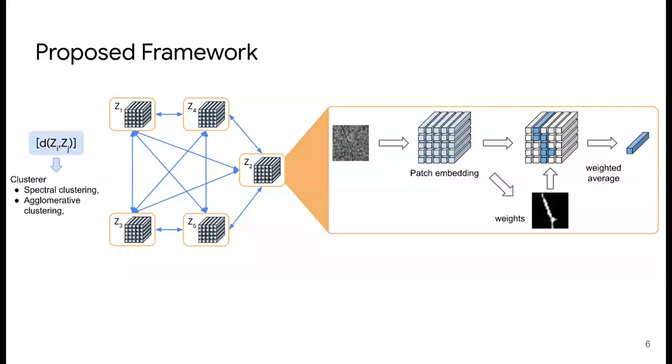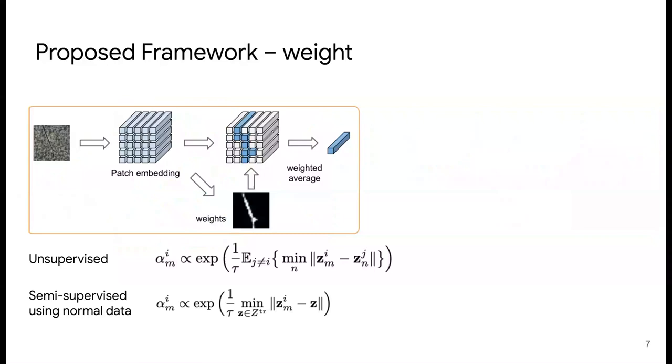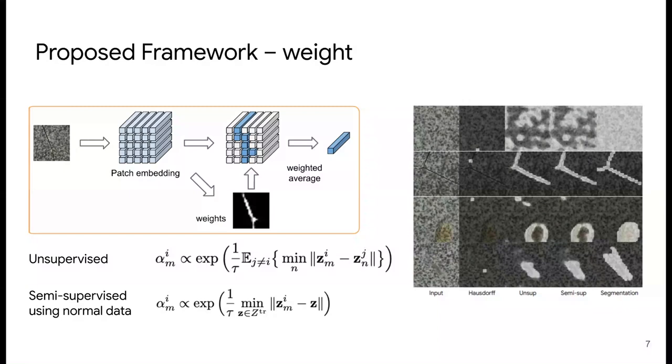As mentioned, the weights specify the importance of individual patch embeddings to help anomaly clustering. In order for these weights to specify the importance, it needs to represent abnormality of patch embeddings at each location. To this end, we propose two ways to compute these weights in a fully unsupervised way or semi-supervised way using labeled normal data. And as shown on the right, our method can provide weights that identify defective regions when they exist.